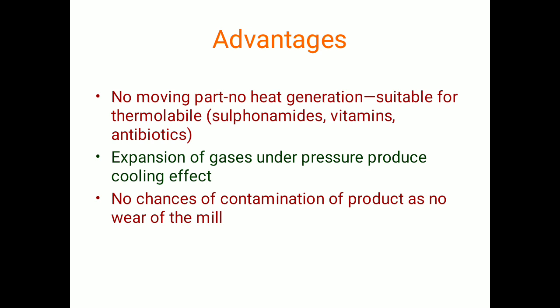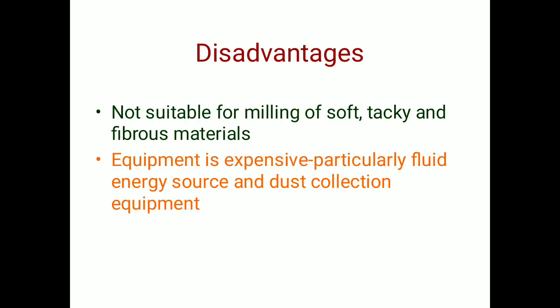The advantages of fluid energy mill: number one, there are no moving parts and no heat generation. It is suitable for thermolabile substances like sulfonamides, vitamins, and antibiotics because the expansion of gases under pressure produces a cooling effect. There is no chance of contamination of the product, as the mill is not subjected to wear and tear like in the case of ball mill.